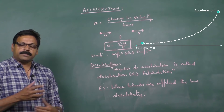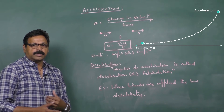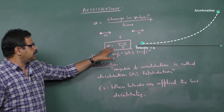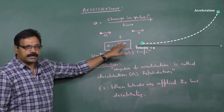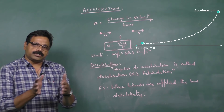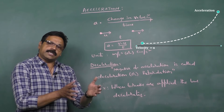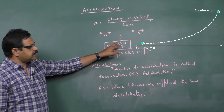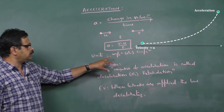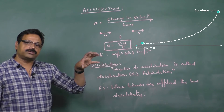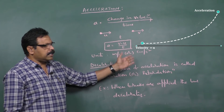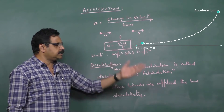In mathematical terms, acceleration is defined as the rate of change of velocity. The simple formula for calculating acceleration is a = (v - u) / t. The change in velocity, v minus u, is in meters per second, and dividing by time in seconds gives meters per second squared. So the unit of acceleration is meter per second square.